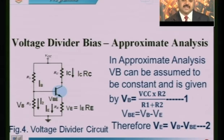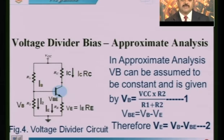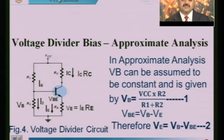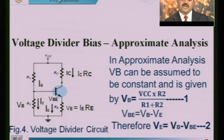One more approximation: VB, the base voltage, is given by VCC × R2 / (R1 + R2). VCC is constant, R2 and R1 are fixed values for a given biasing circuit. Therefore all parameters on the right-hand side of equation 1 are constants, and VB is assumed to be constant.